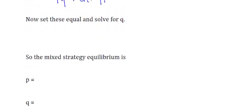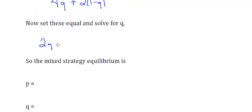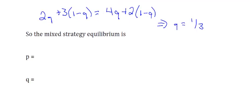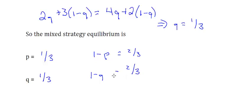Setting these equal to each other: 2Q plus 3(1 minus Q) equals 4Q plus 2(1 minus Q). Solving this out, we find that Q equals 1/3. So the mixed strategy equilibrium is P equals 1/3 and Q equals 1/3, which also means 1 minus P is 2/3 (the probability of playing down) and 1 minus Q is 2/3 (the probability of playing right).